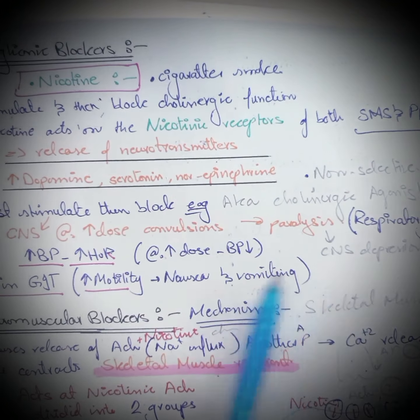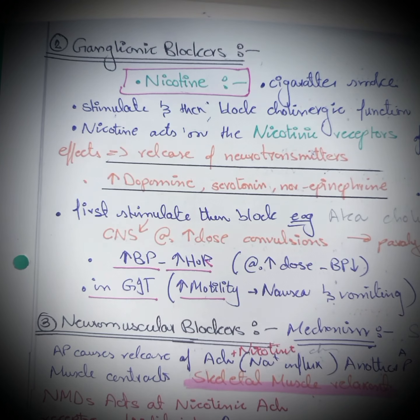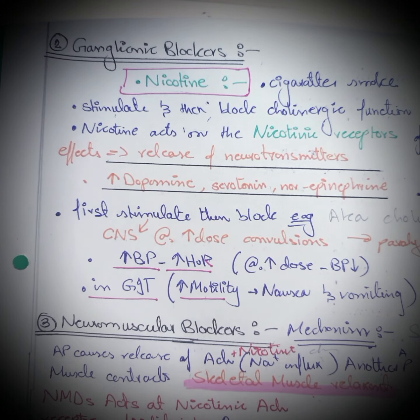In the GI tract, nicotine causes increased motility, nausea, and vomiting. That covers the ganglionic blockers — I tried to keep it as brief as possible, just summarizing the key points.